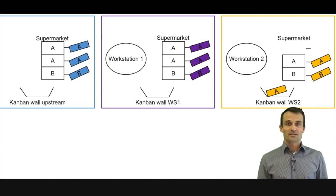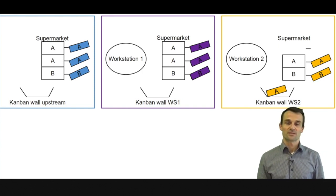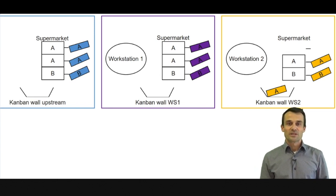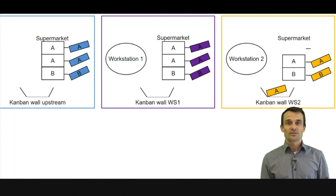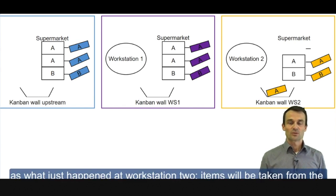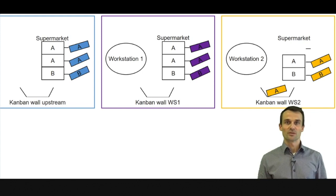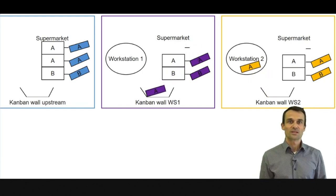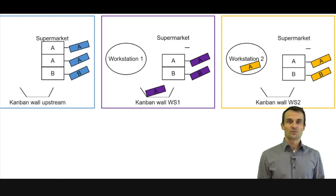Workstation 2 has some available capacity. If it has available capacity, it checks its Kanban wall to see what it has to produce next. Now it can see on its Kanban wall that item A has been sold — there is a Kanban card for item A on the wall, so it is allowed to produce item A. Workstation 2 takes the Kanban card and starts producing the next A item. But for that, it needs the materials from the upstream workstation — workstation 1 in our example. Items will be taken from the supermarket and the Kanban cards will be detached and moved to the Kanban wall.